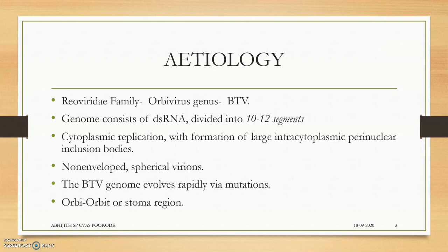Etiology: it belongs to the Reoviridae family. Reo means Respiratory Enteric Orphan — they are mainly active in the respiratory and enteric systems. The genus is Orbivirus, mainly attacking the oral and stomatal region. The genome consists of double-stranded RNA divided into 10 to 12 segments. The number of segments for Blue Tongue virus — 10 to 12 — was asked in many entrance examinations.